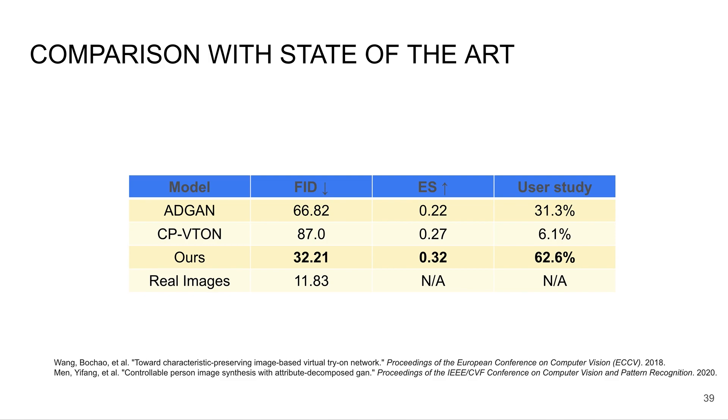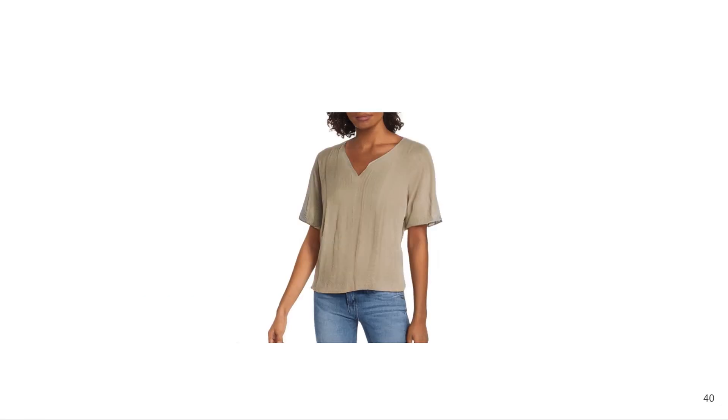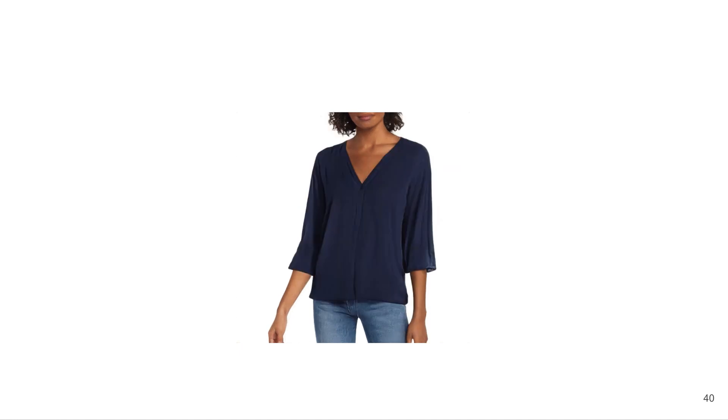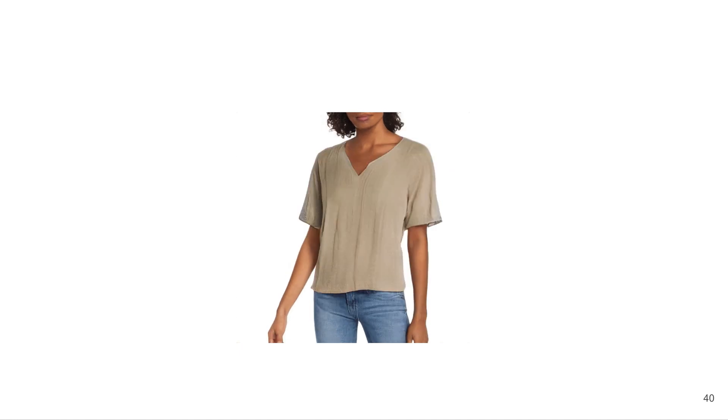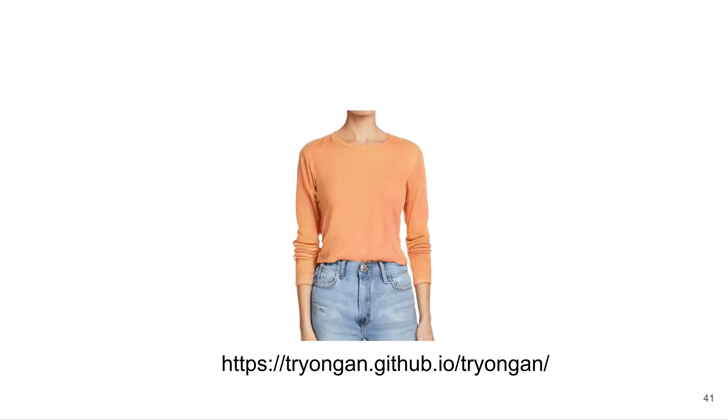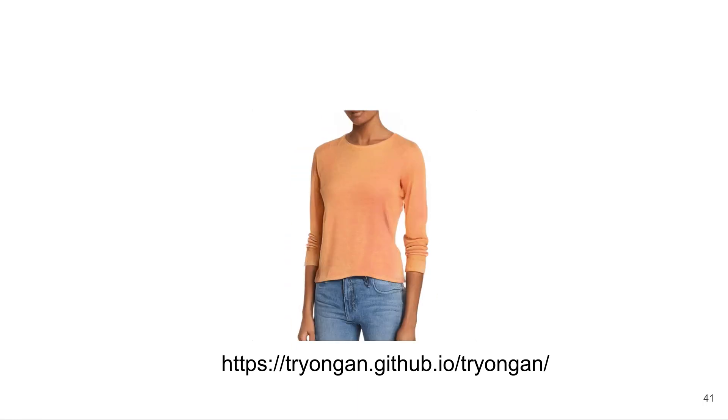We also show that we outperform in quantitative metrics, as well as the user study. I'll end with two GIFs. The first shows results from our method of the same person trying on different shirts. You can see she's able to try on a variety of shirts without changing her identity or her jeans. And the second shows different people trying on the same shirt. Below is the link for our website for more details. Thank you.